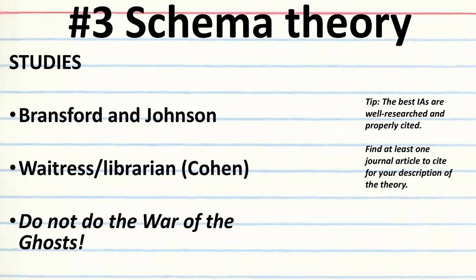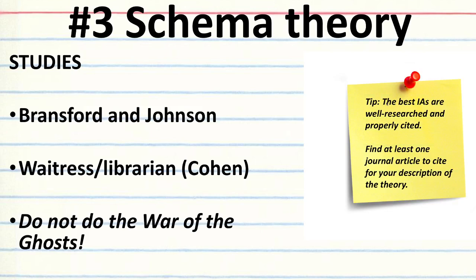A note on schema theory and actually your IA in general. The best IAs are well-researched and properly cited. What I mean by well-researched is I would recommend finding at least one journal article to cite for the description of your theory, or to use a claim of that theory that links really nicely to your study. I'm not going to do that research for you, nor should your teacher, nor will your teacher. If you're aiming for a 7, that's the level of effort that I recommend putting into the IA. It's not that much more work, actually, probably maybe 30 minutes or an hour where you're going to find some original journal articles that talk about the theory you're using and find a nice quote or an aspect of, or a claim from that theory that you can cite that will link to your study.